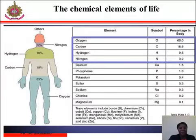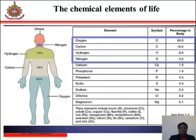The chemical elements of life. Around two dozen of the 92 naturally occurring chemical elements are essential to various kinds of biological life. Most rare elements on Earth are not needed by life, while a few common ones are not used. Most organisms share element needs, but there are a few differences between plants and animals. For example, ocean organisms use bromine, but land plants and animals seem to need none.